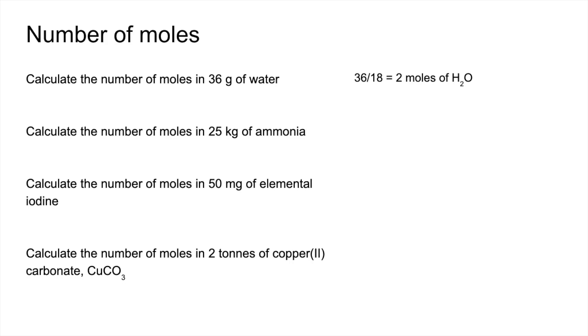Next one, we've got the mass in kilograms, so we've got to put that into grams first. So 25 kilograms is 25,000 grams. Divide that by the MR of ammonia, which is 17. And I've put this to the nearest whole number, so it's 1471 moles of ammonia.